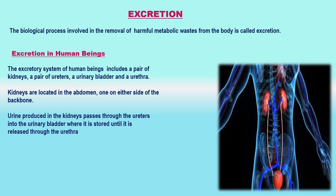How organisms get rid of gaseous wastes generated during photosynthesis or respiration, and other metabolic activities that generate nitrogenous materials which need to be removed — the biological process involved in the removal of these harmful metabolic wastes from the body is called excretion. Different organisms use varied strategies to do this. Many unicellular organisms remove these wastes by simple diffusion from the body surface into the surrounding water.